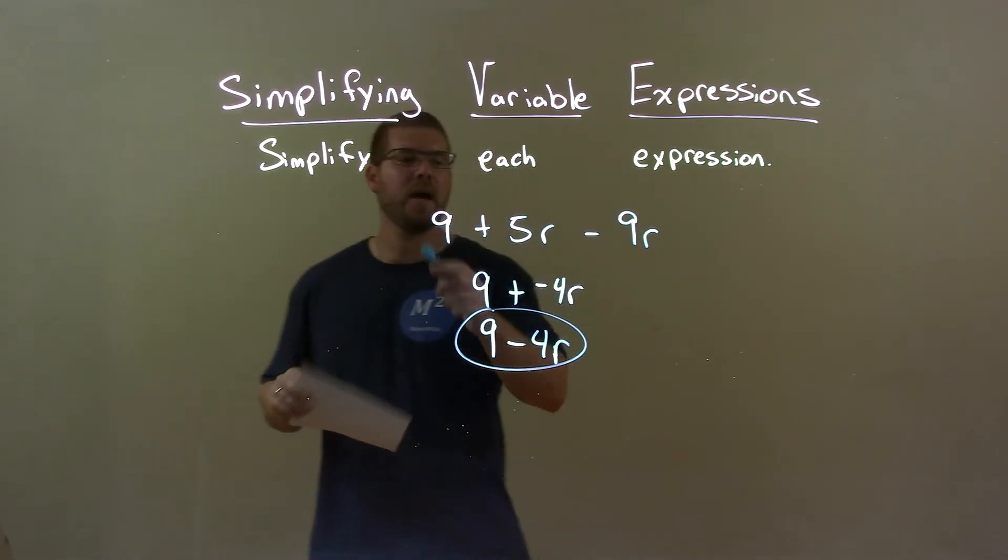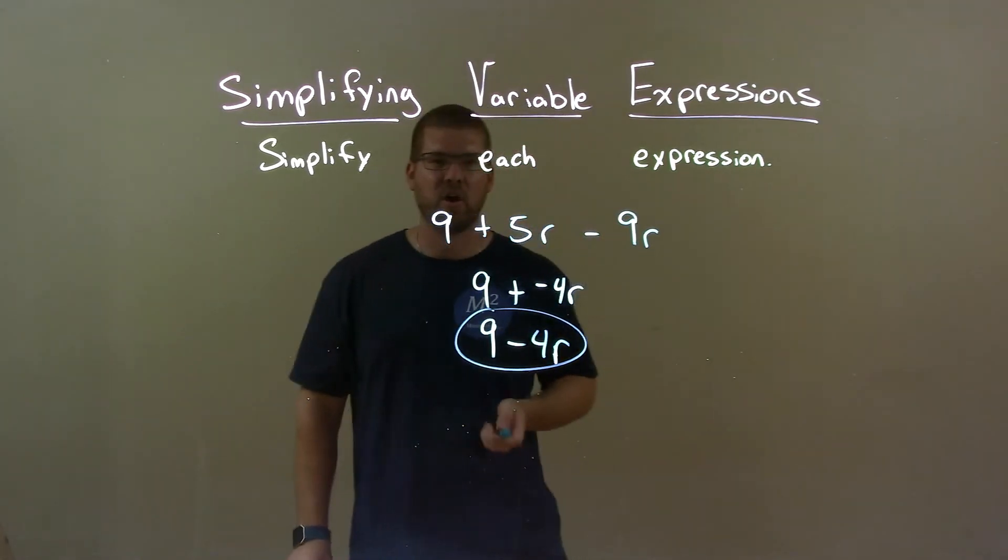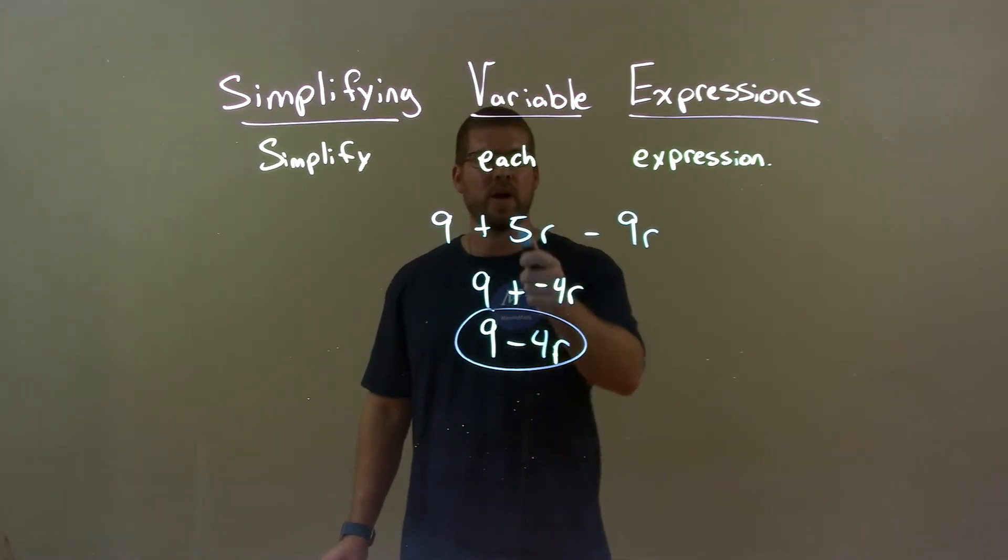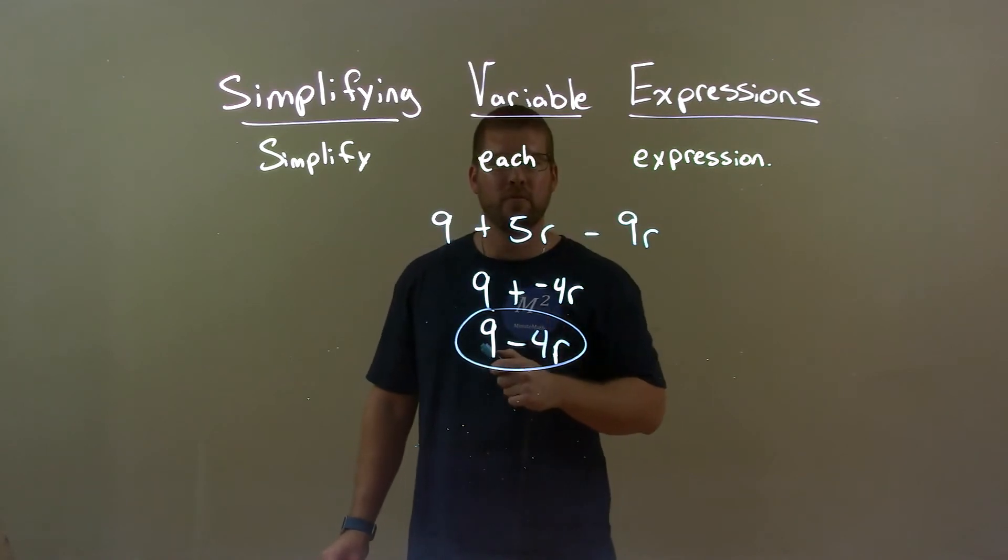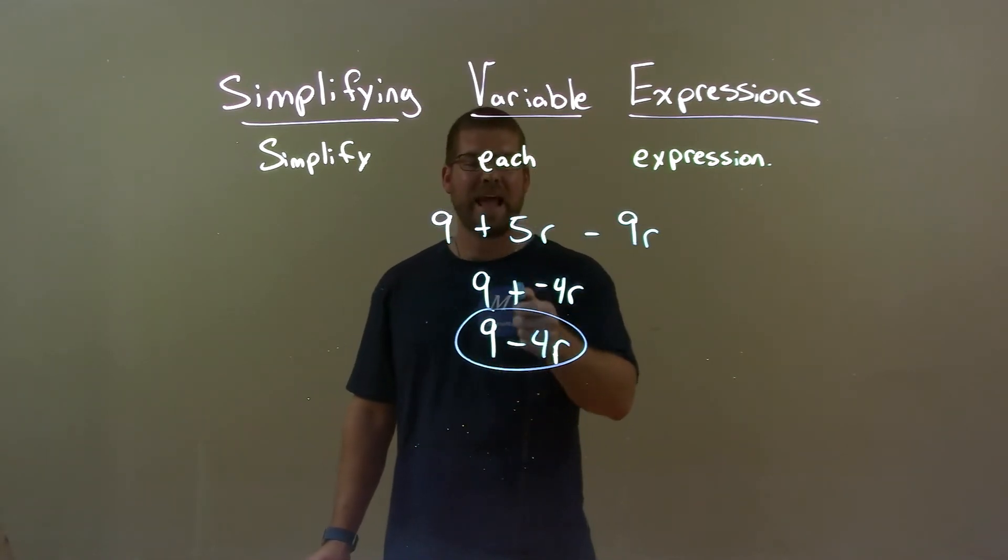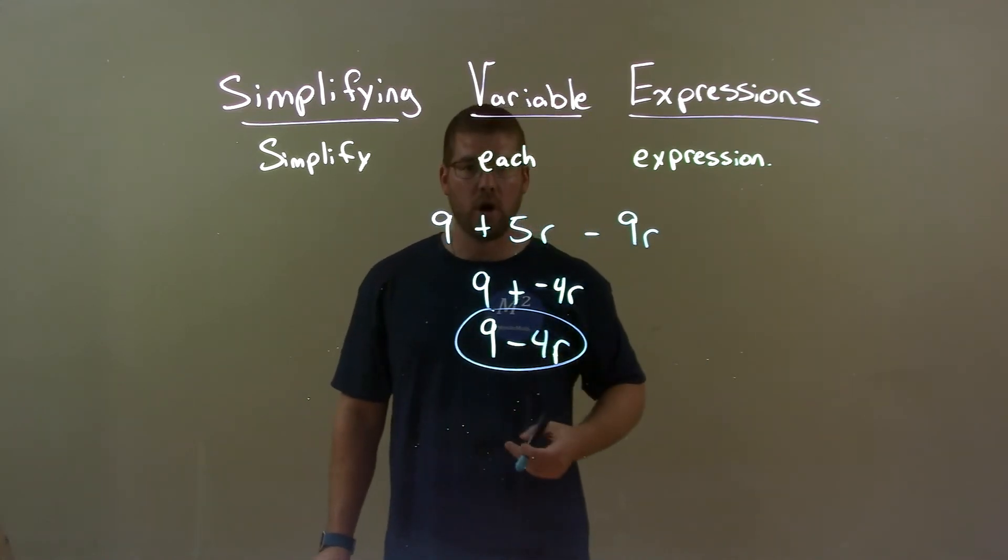Quick recap. We have 9 plus 5r minus 9r and we had to simplify that. Combining like terms, 5r minus 9r was a negative 4r. Bringing down the 9, adding a negative, same thing as subtraction. So my final answer here is just 9 minus 4r.